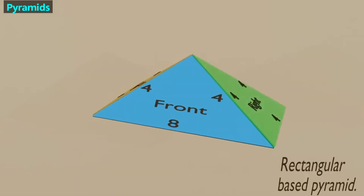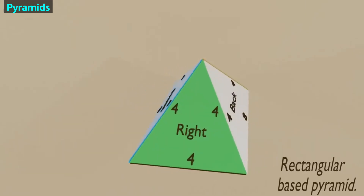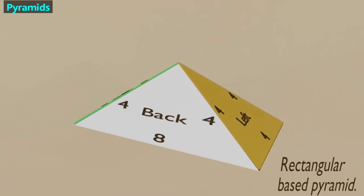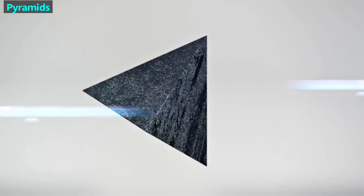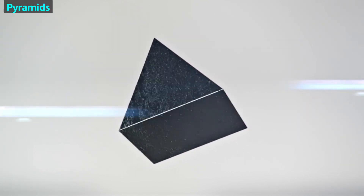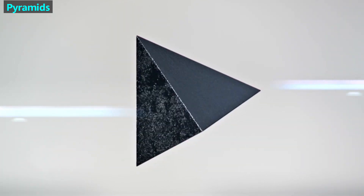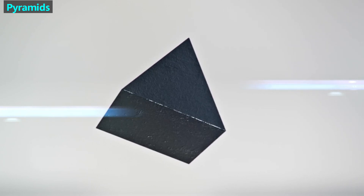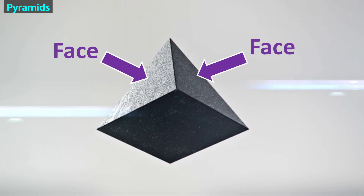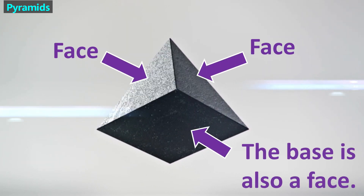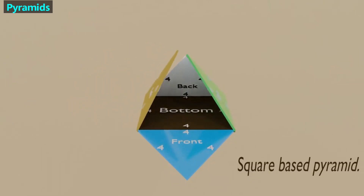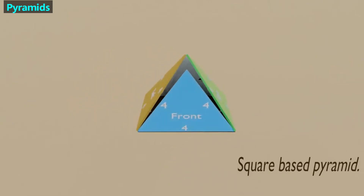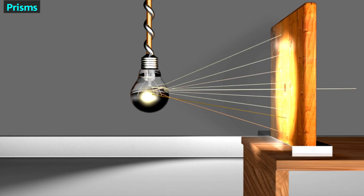This is an important way to tell the difference between pyramids, cones, and a triangular prism. Instead of using the word wall to refer to the sides, we often call them faces. This is the name we use for the sides of pyramids and also for prisms. Many test makers also consider the base to be a face, especially for pyramids and prisms. As with all the shapes in this video, pyramids can be hollow or solid.